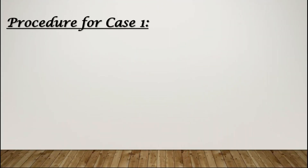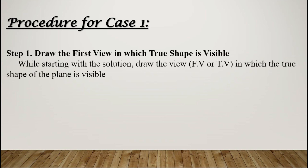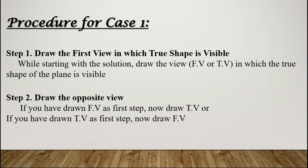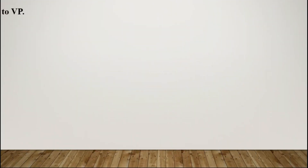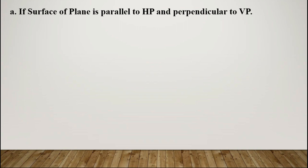Let us see the procedure for case one. Step one: draw the first view in which the true shape is visible. Step two: draw the opposite view — if you drew the front view first, now draw the top view; if you drew the top view first, now draw the front view. Sub-case one: if the surface of the plane is parallel to HP and perpendicular to VP.